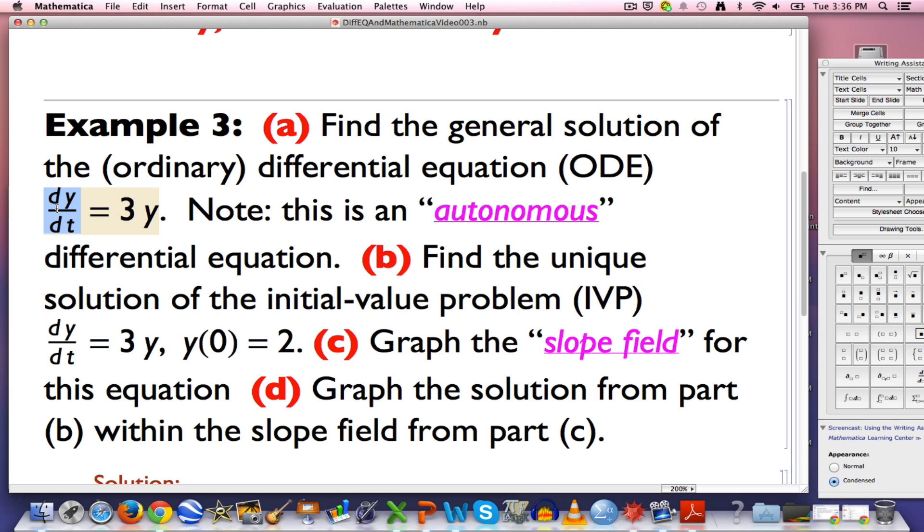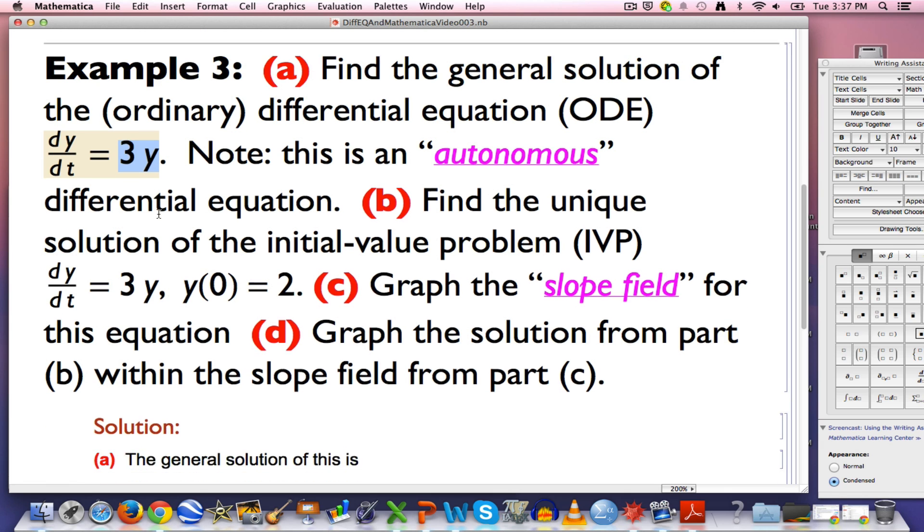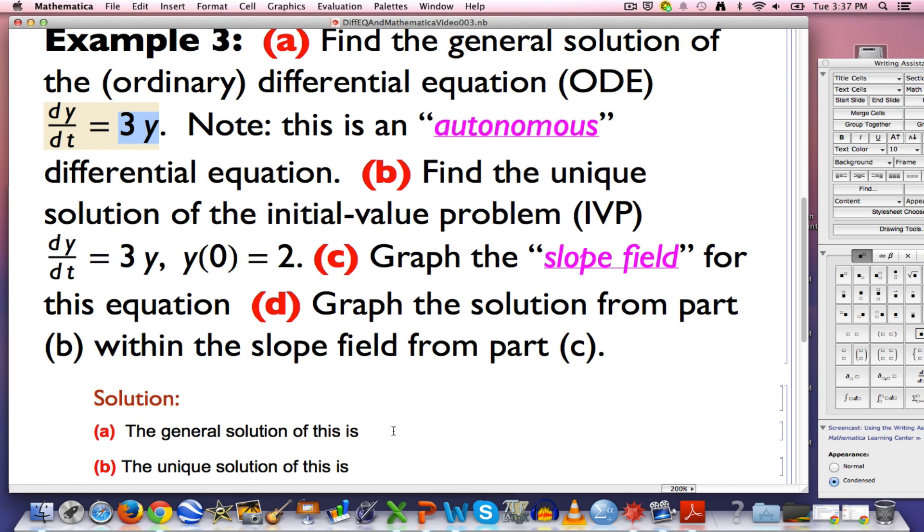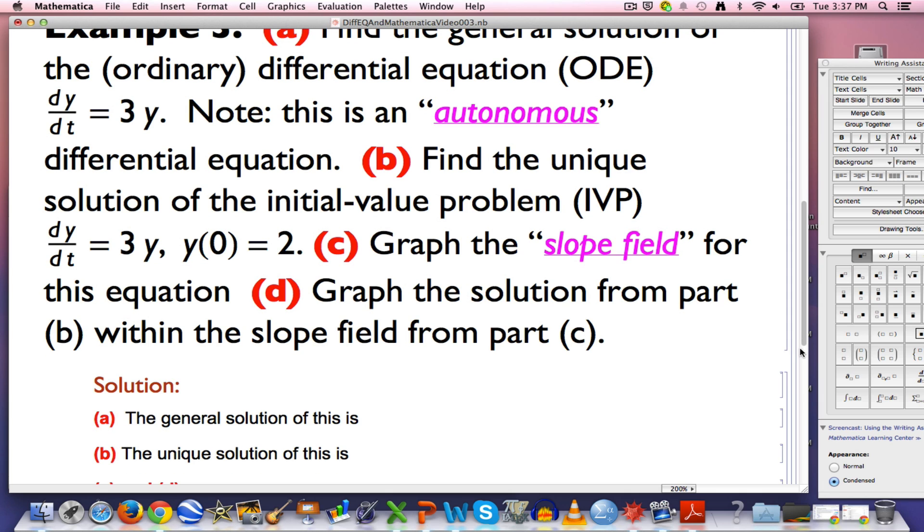Instead, you need to think about this right. You are after y as a function of t whose derivative dy/dt always equals 3 times the function. This equation is saying you are after a function whose derivative dy/dt always equals 3 times itself. Pause the video, take a moment to think about that. Then come back. I hope you can figure out the general solution on your own based on what I just described.